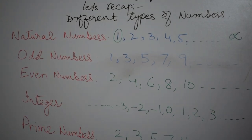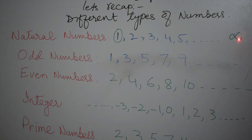Here, students, it starts from one and it ends at infinity and nobody knows what is infinity. This sign over here is the infinity sign. Let us proceed towards the next, and it is odd numbers.